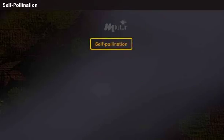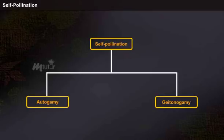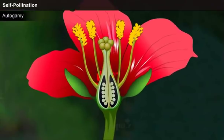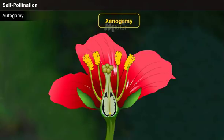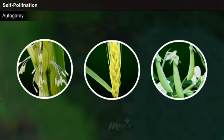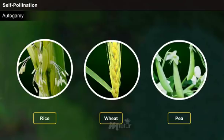There are two kinds of self-pollination: autogamy and geitonogamy. Autogamy is when pollen grains move from the anther to the stigma inside the same flower. This kind of pollination occurs in a bisexual flower. Examples include rice, wheat, pea, etc.